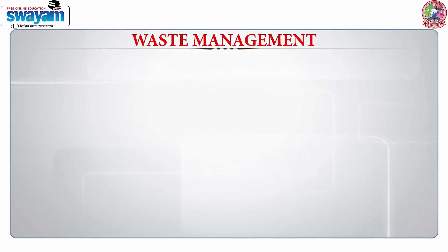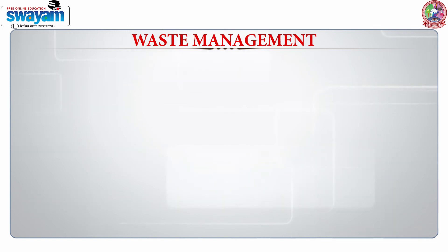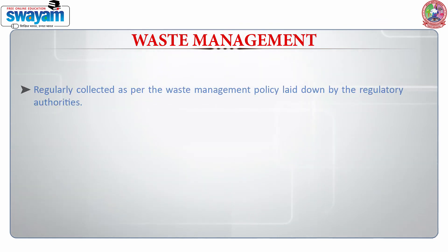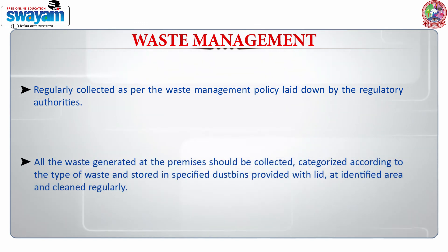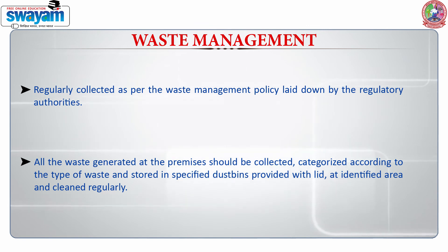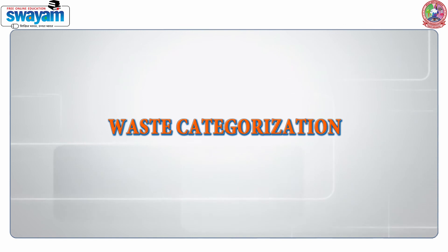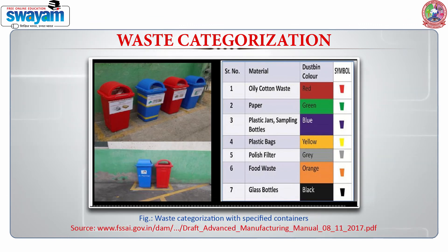After pest control, it is very important to take charge of waste management — this is one area which should not be ignored, otherwise all other systems in place will fail. Waste should be regularly collected as per the waste management policy, which should be laid down based on regulations as suggested by regulatory authorities. All waste generated at the premises should be collected, categorized according to type, and stored in specified dustbins with lids, kept at identified areas and cleaned regularly. Waste should be segregated depending on type, with each color-coded bin representing a specific type of waste.